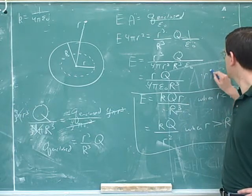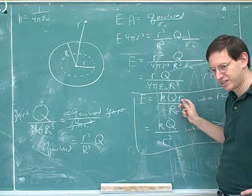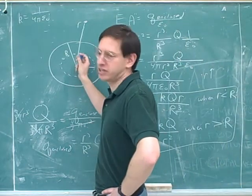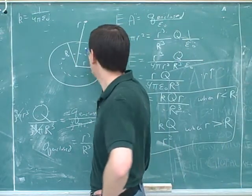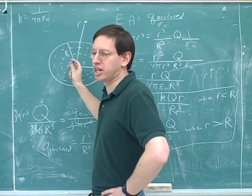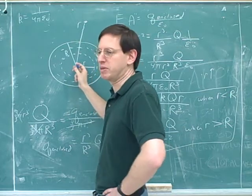As which r gets bigger? Sorry, as little r gets bigger. As E gets bigger. And the reason is that more and more charge is enclosed in your Gaussian surface. The further out you are, the more charge of the ball is actually going to be enclosed, and so the greater the electric field can be.